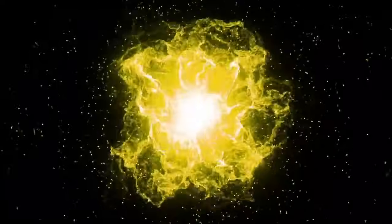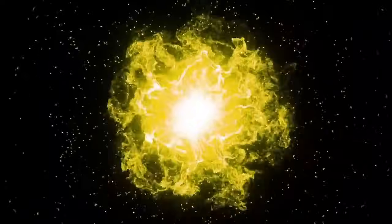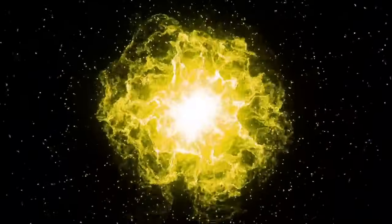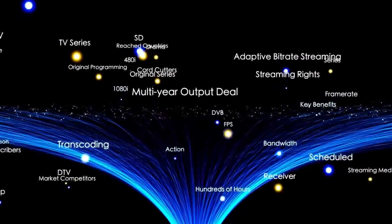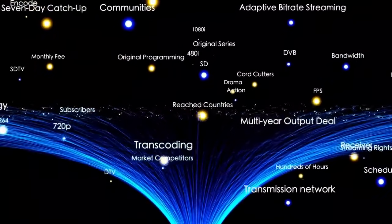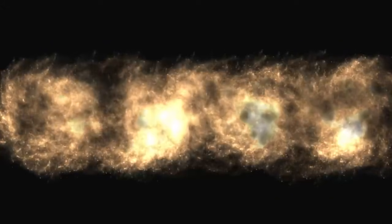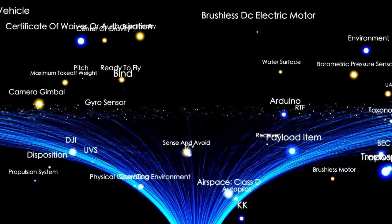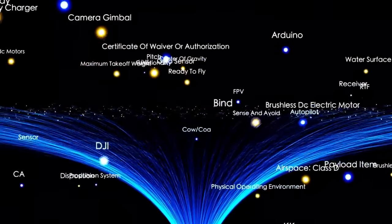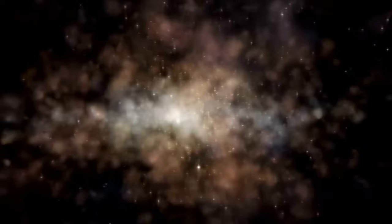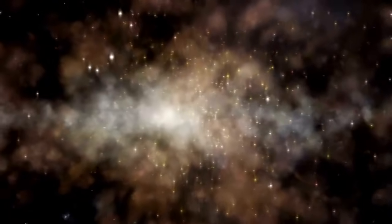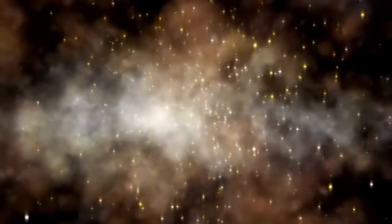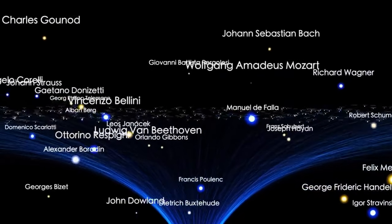Currently, scientists estimate that the diameter of the observable universe is approximately 93 billion light-years. This measurement is surprisingly vast when compared to the estimated age of the universe, which is about 13.8 billion years. The reason for this apparent discrepancy lies in the continuous expansion of the universe. Over time, cosmic expansion has caused objects that were once relatively close together to move increasingly farther apart. As a result, the light emitted from these objects has taken longer to reach us, making the universe appear much larger than its age might suggest.